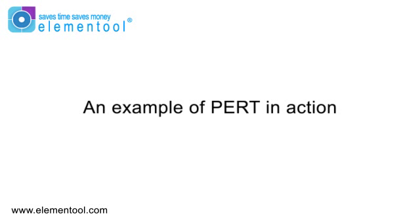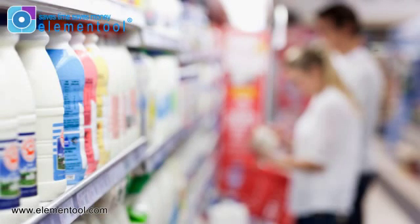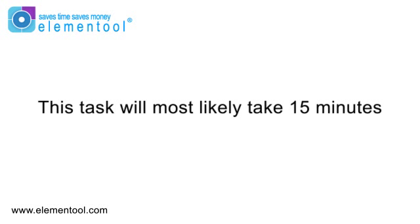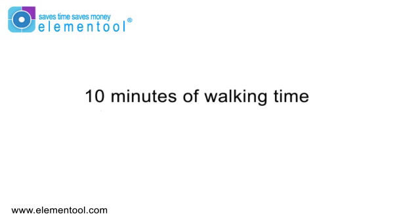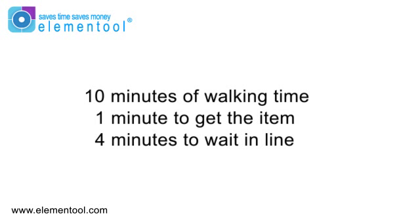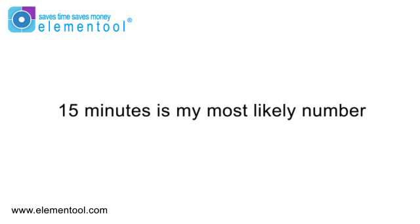Now let me give you an example of PERT in action. Let's say I want to walk down to the corner market to buy a quart of milk. From my experience, I think this task will most likely take about 15 minutes: it's 10 minutes of walking time, 1 minute to get the item, and 4 minutes to wait in line. So 15 is my most likely number.